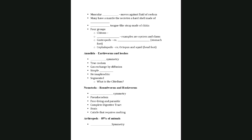The next phylum is Annelida — annelids — with the earthworm as the best example, also including leeches. These have bilateral symmetry, a true coelom, and gas exchange by diffusion. They have a simple brain and are hermaphroditic. These are segmented worms — you can see the body broken up into segments. A specialized reproductive structure called the clitellum is visible as a distinct banded area on the earthworm.